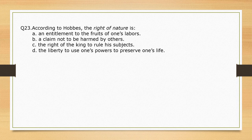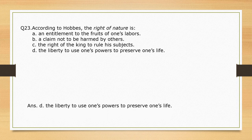According to Hobbes, the right of nature is — options: an entitlement to the fruits of one's labors; a claim not to be harmed by others; the right of the king to rule his subjects; the liberty to use one's powers to preserve one's life. These questions are very important for any competitive exam wherever Hobbes is in the syllabus. The correct option is option D: the liberty to use one's power to preserve one's life.